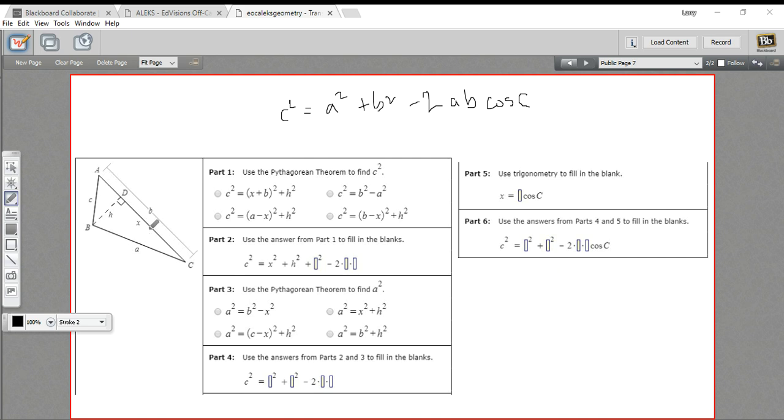And we're starting with this triangle. So we've got a triangle that's been broken up into two right triangles by dropping this altitude here. The first step here says use the Pythagorean theorem to find c squared. Well, where is side c? That's this side right here. That's the hypotenuse of this little right triangle. So c squared would just be these other two sides. One side is h.